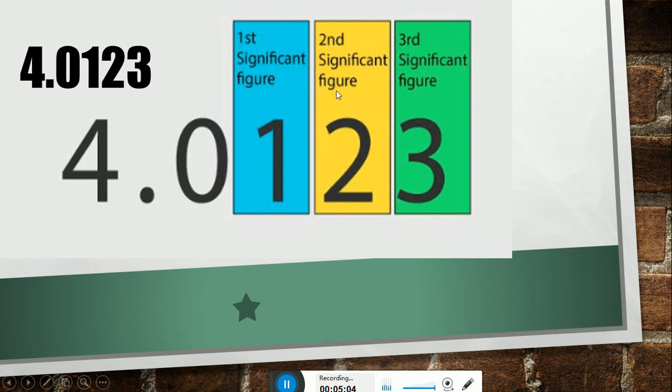one is the first significant figure, two is the second significant figure, three is the third significant figure. But I want to know, does this number have only three significant figures or five significant figures?